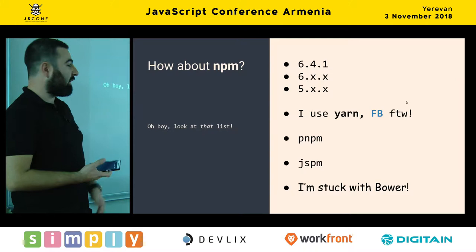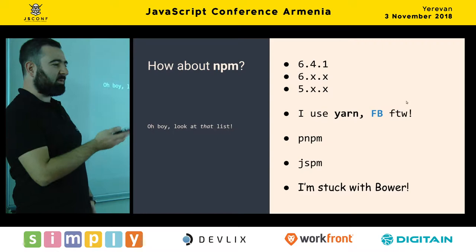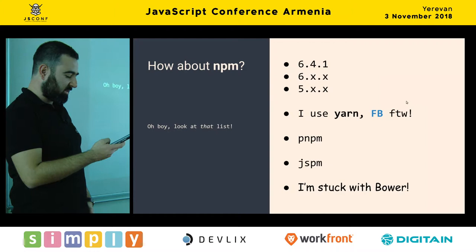What about NPM? Are you using 6.4.1, or any of the six variants, or five? Maybe you're using Yarn — do you know which version of Yarn you're using? Maybe even PMP or JSPM — these are old ones. Or maybe you're using Bower, because there's a problem you can't migrate to NPM.